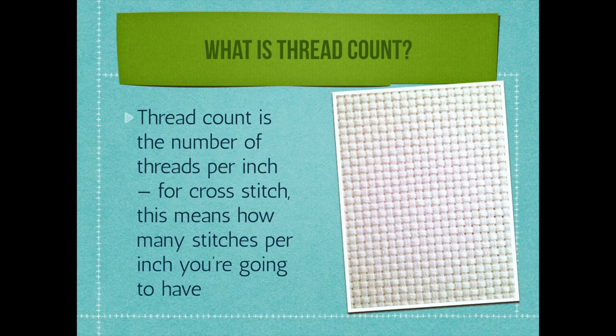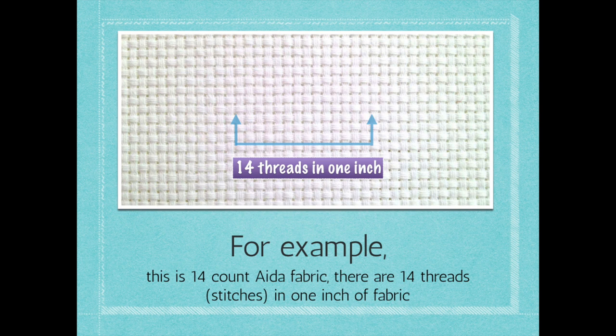No judgement here — if you like using Aida, power to you, use what you like. So for example, you can see that this is 14-count Aida fabric. If you actually count, you'll see that there are 14 of those little Aida blocks, and that represents one inch of stitching. So in one inch of stitching measured with a ruler on your fabric, you're going to get 14 stitches, going over each individual block as one stitch.